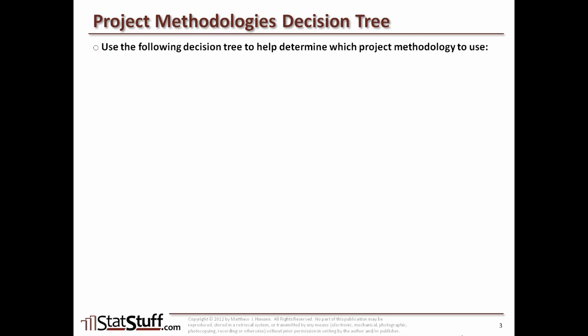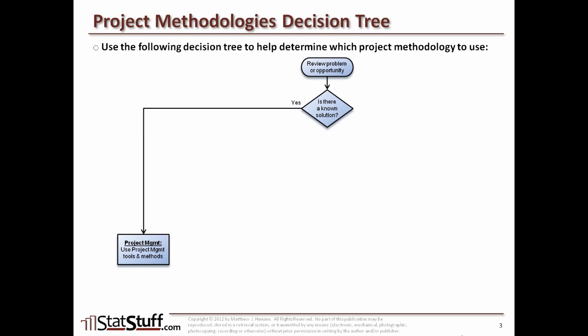First, we're going to start off by saying there's some problem or opportunity that we need to review. Based off of that, we would ask: is there a known solution for that problem? If there is a known solution, we might move down the path to say we're going to apply some project management methodologies — like through PMI — to implement that solution.